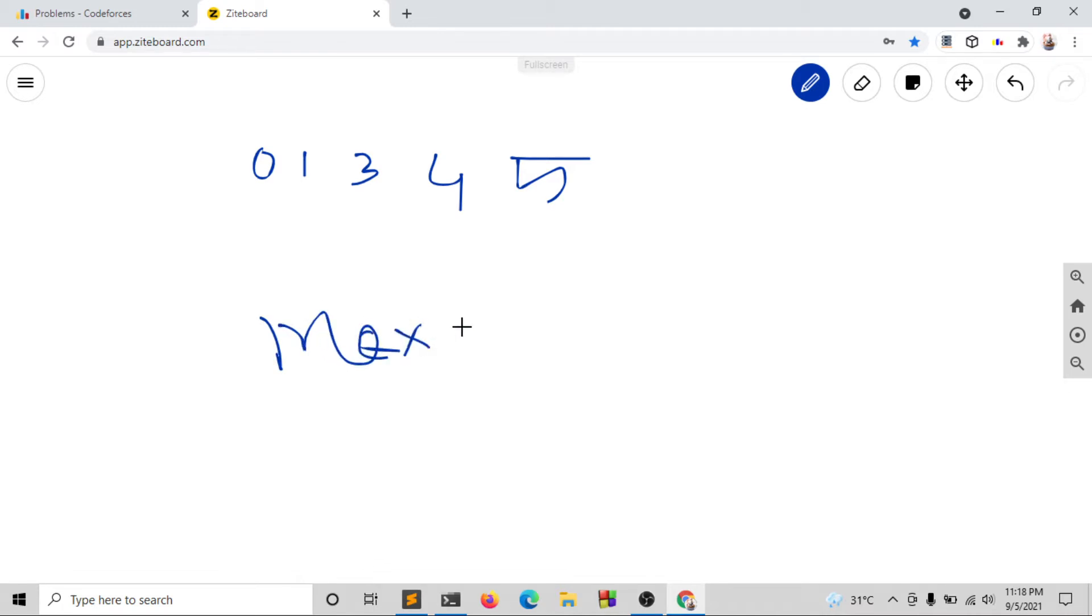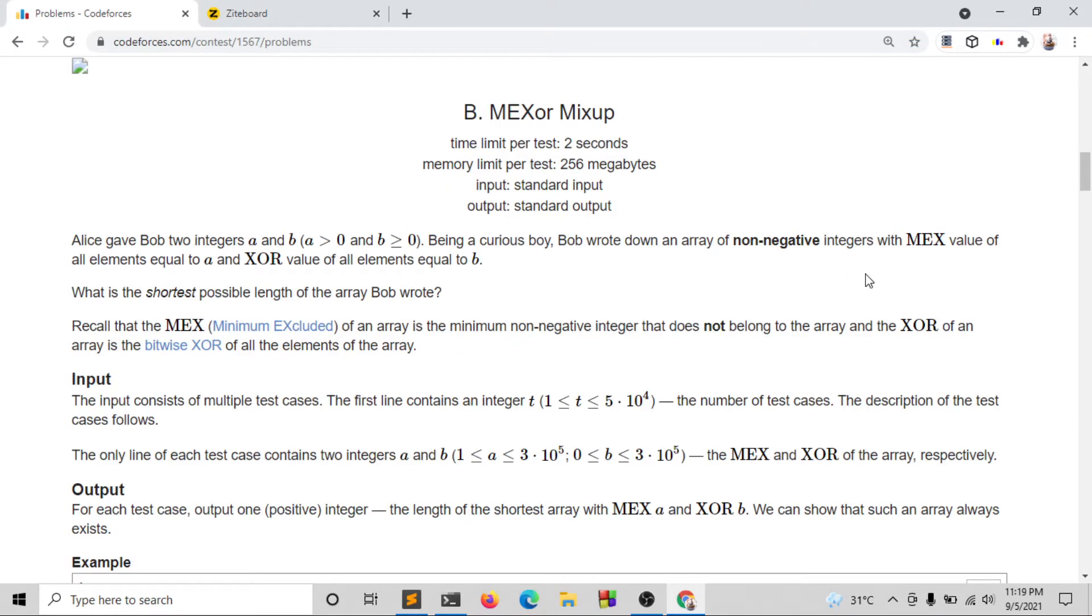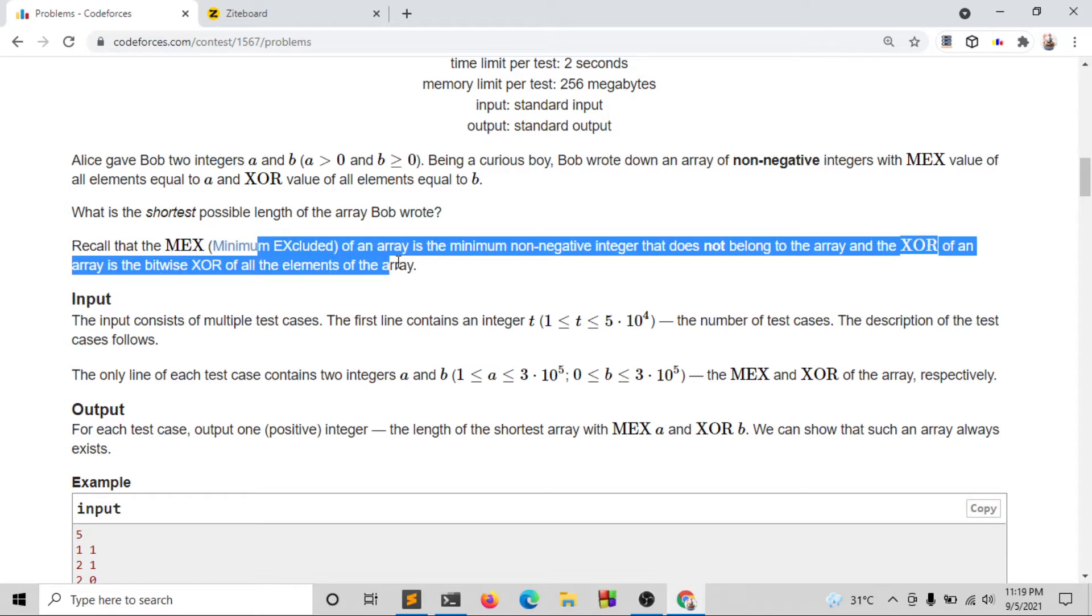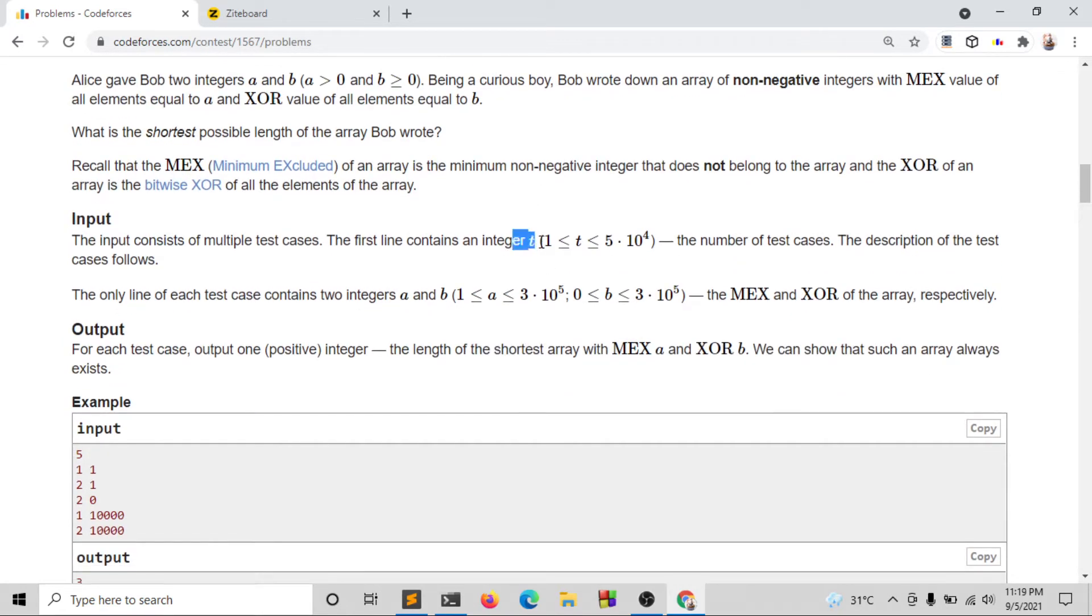The MEX or minimum excludant is the minimum value not present in the array. We need to find the minimum value and work with it. The array consists of multiple test cases. The first line contains an integer f where 1 ≤ f ≤ 10^4. For each test case, we need to find the length of the shortest array using MEX and XOR operations.